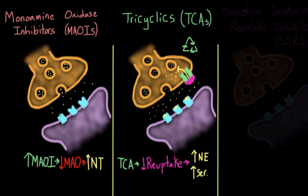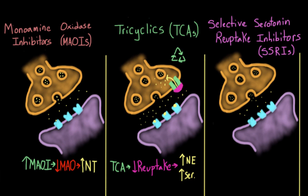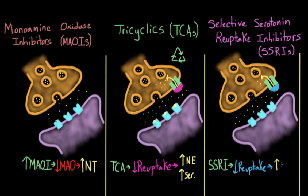SSRIs — selective serotonin reuptake inhibitors — work the same way, by blocking reuptake channels. But instead of blocking them for both norepinephrine and serotonin like TCAs, they only block reuptake for serotonin, and only for very specific serotonin receptors. Like MAOIs, the name of the drug describes what the drug does. SSRIs are probably the antidepressants you're most familiar with, as this class includes fluoxetine, also known as Prozac.